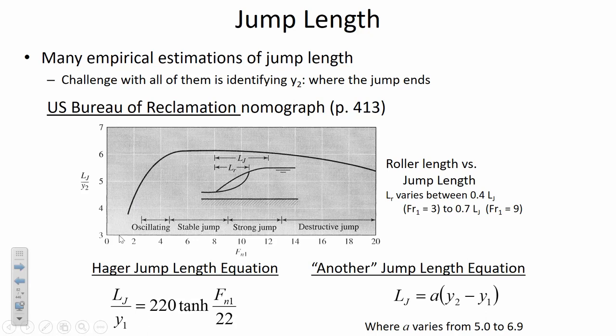The book also identifies another, simpler jump length equation — so simple they didn't even bother naming it. It says the jump length is some factor A between 5.0 and 6.9 multiplied by the difference between the depths. If we have enough time to take measurements of the jumps today, let's see if we can agree on the length of the jump and the roller length to check the accuracy of these equations.